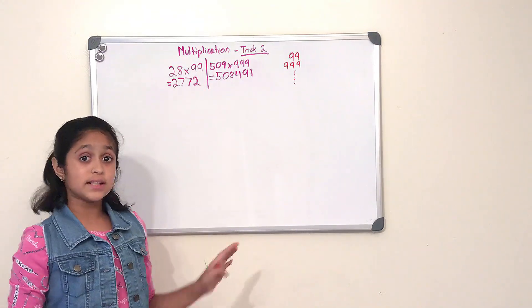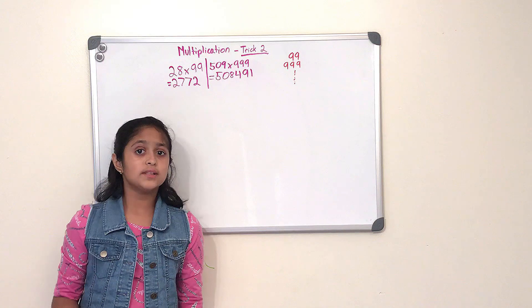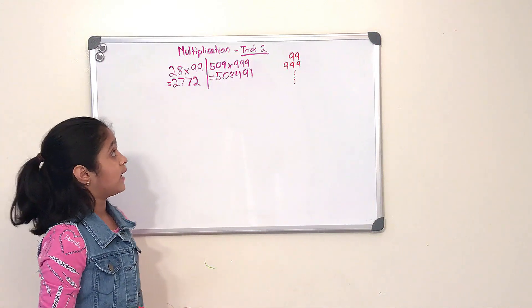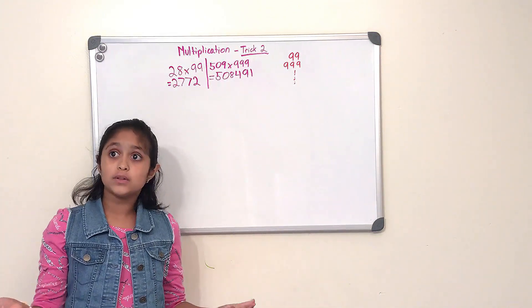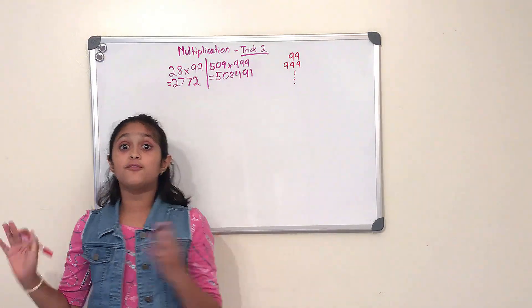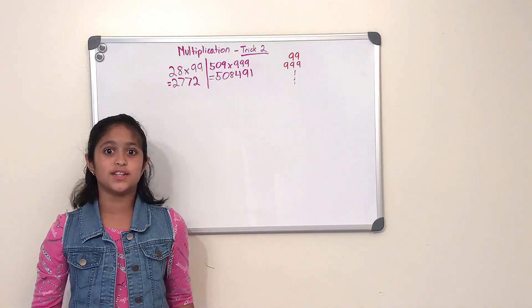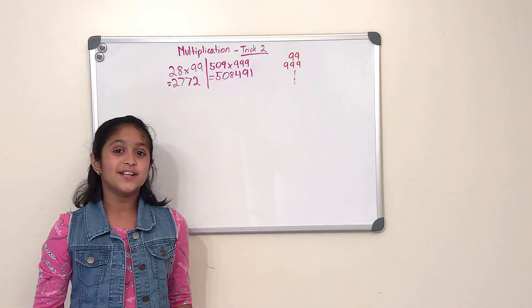So this is what we did in our previous video. But today we're going to learn how to multiply like a three-digit number multiplied by four nines or a four-digit number multiplied by three nines. So let's get right into it.